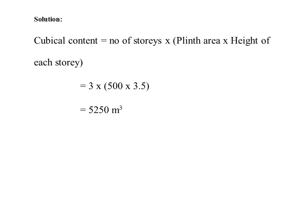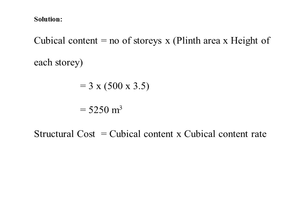Now calculate the structural cost. Structural cost is equal to cubical content into cubical content rate. The value is 5,250 m³ into 1,000, giving 52,50,000. The structural cost is 52.5 lakhs.